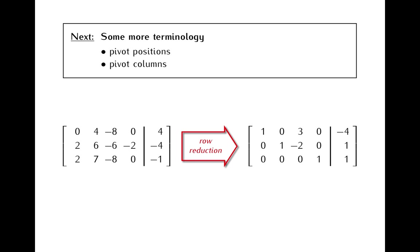One of the main features of this reduced matrix is that it contains leading ones. The placement of these leading ones tells us a lot about solutions of the system of equations. If after a row reduction we have no leading one in the column of constants, then the system is consistent, so it has solutions. If we don't have a leading one in a column of the coefficient matrix, then the variable corresponding to that column is a free variable.